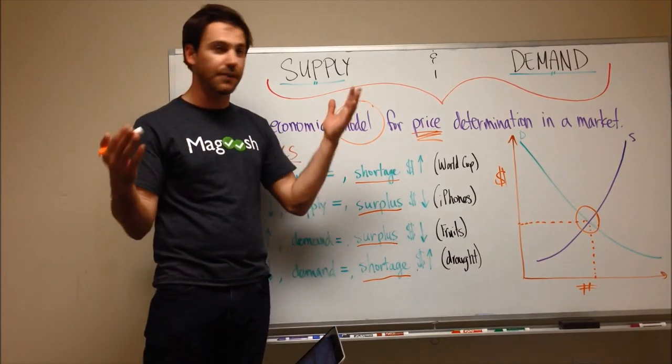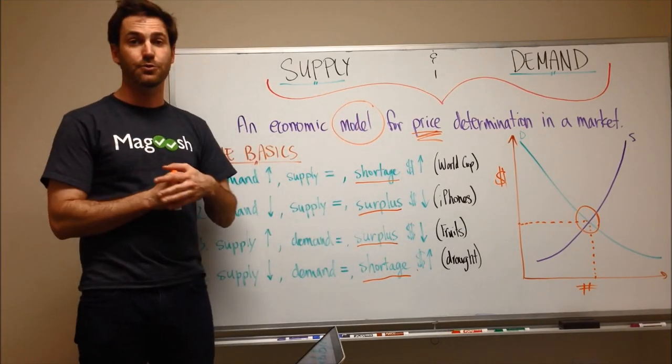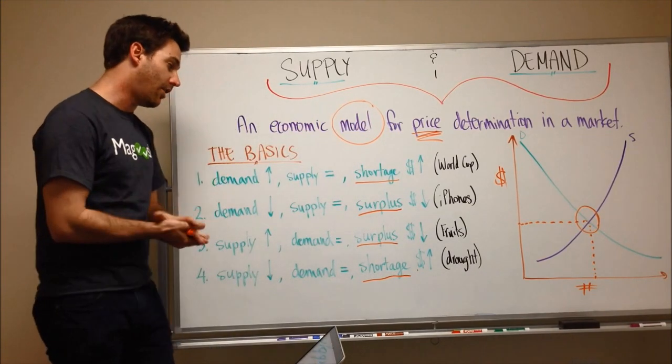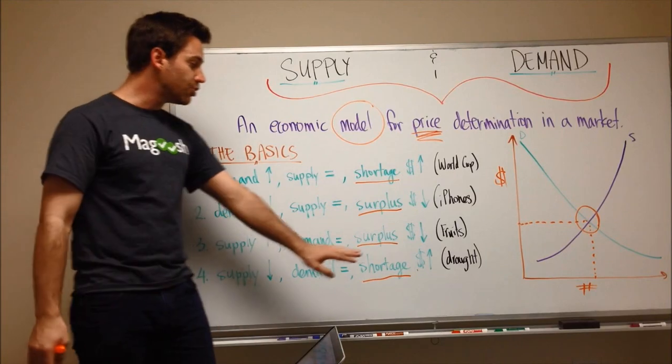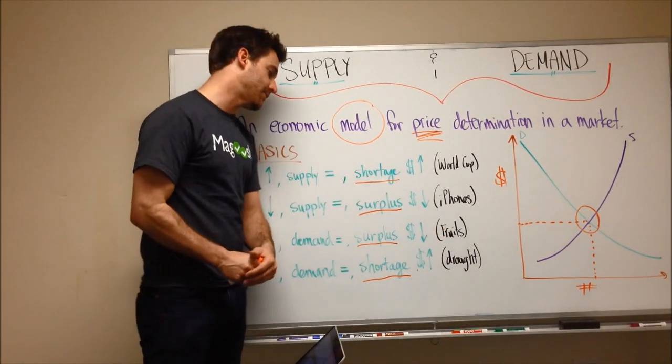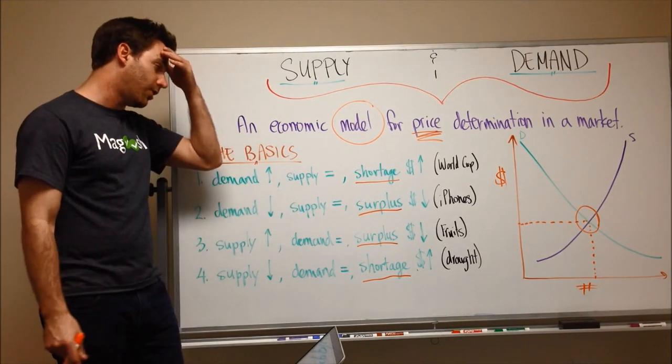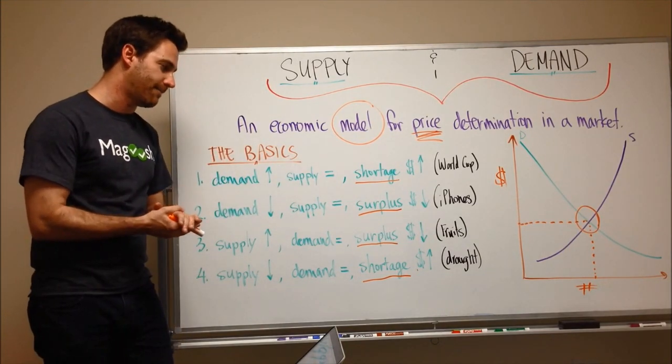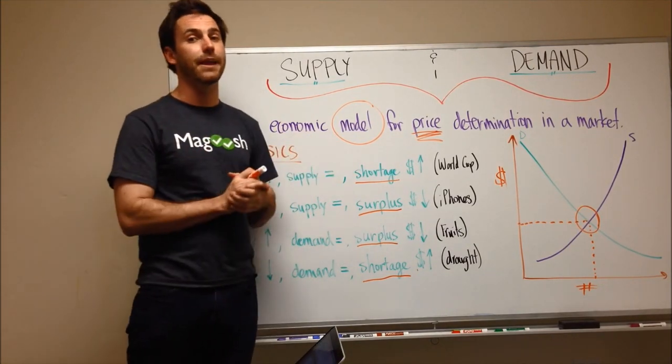Demand has stayed the same. Nothing's changed. We still want to grow our fruits and vegetables and still raise all of our animals. There's a shortage of water, and so the price of water is going up.